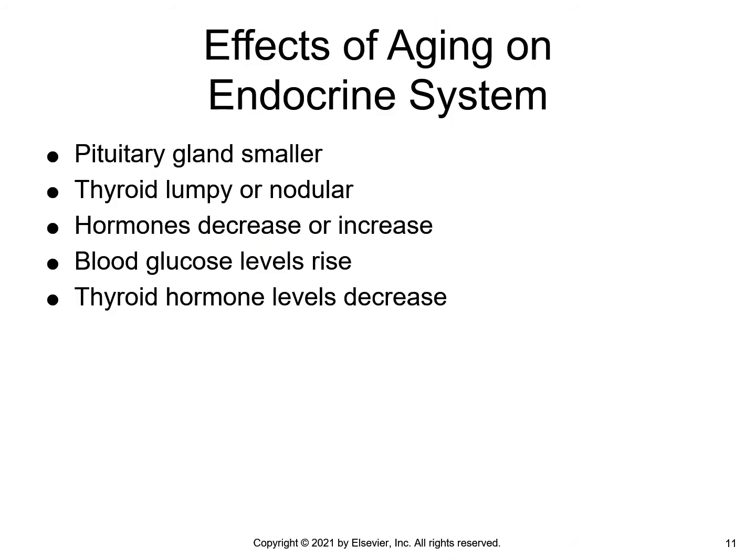Metabolism gradually declines around 20 years of age. Hormones that decrease with older age include aldosterone, renin, calcitonin, and growth hormone. Some hormones decrease specifically in women, which include estrogen and prolactin, and in men it is testosterone.